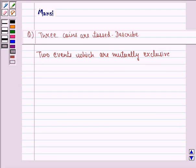Hello and welcome to the session. My name is Mansi and I'm going to help you with the following question. The question says: 3 coins are tossed. Describe 2 events which are mutually exclusive.